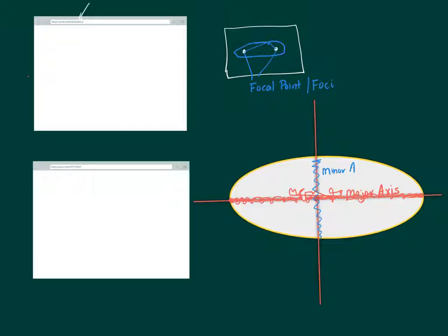The short one is always called the minor axis and the long one is always called the major axis, even if this was standing straight up and down instead of going left to right. We know what our ellipse looks like and we know we have a major and a minor axis.